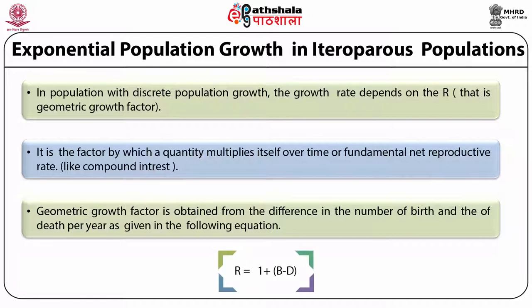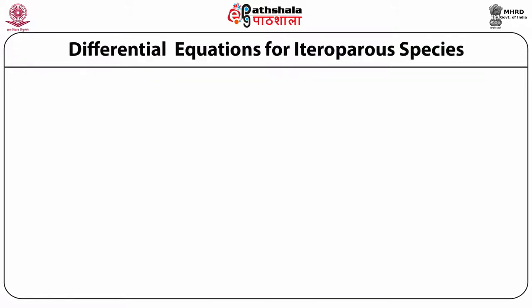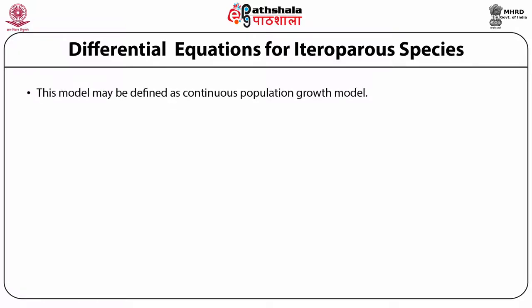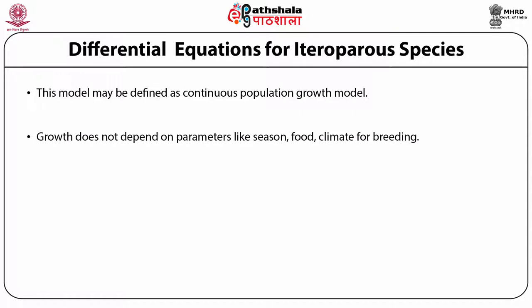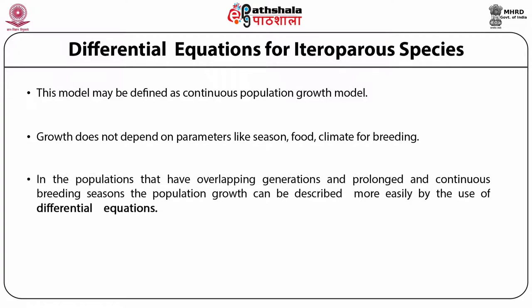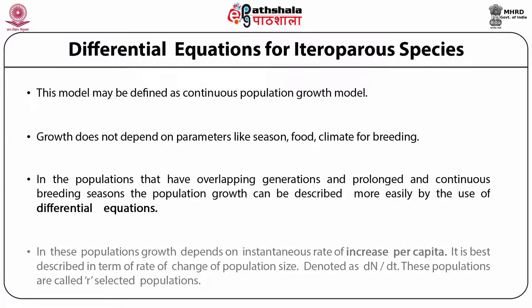The geometric factor is obtained from the difference in the number of births and deaths: R = 1 + B − D. The exponential growth model for iteroparous populations may be defined as a continuous population growth model, like compound interest. Growth does not depend on parameters like seasons, food, or climate for breeding. In populations with overlapping generations and prolonged continuous breeding seasons, population growth can be described by differential equations. These populations are called R-selected species.